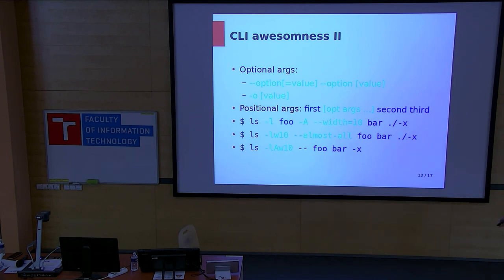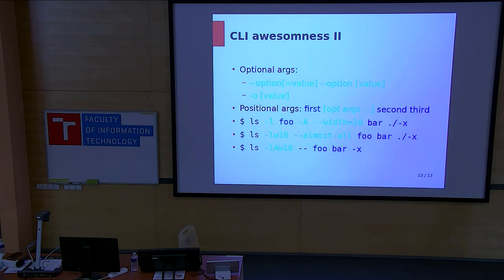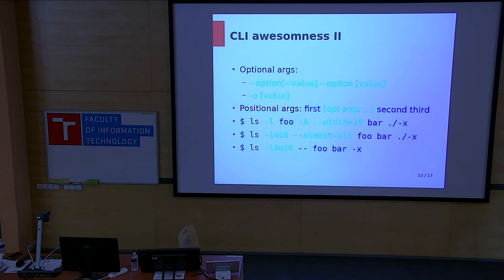This is called the GNU standard, and what it introduced are long options — you write double-dash and something descriptive, something people can read, which helps the readability of what goes on when the script is executed. Moreover, the GNU standard allows mixing of positional and optional arguments, which POSIX does not. The LS command will interpret 'foo' as a directory and 'bar' also as a directory and won't complain. You can specify dash-dash long-option equals something, or dash-dash long-option space something.